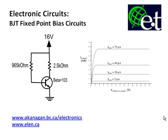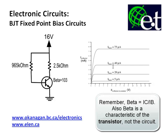David Williams here to talk about bipolar junction transistor fixed point bias circuits. In this picture is a fixed bias circuit with the transistor, and the resistors connected to the 16 volt power supply set up the fixed point bias circuit. On the other side is the characteristic curve for this particular transistor with a beta of about 100.